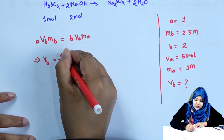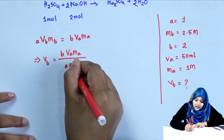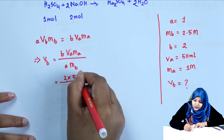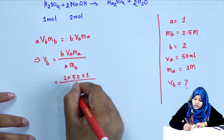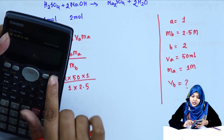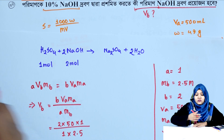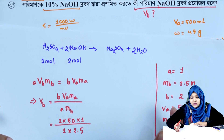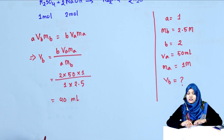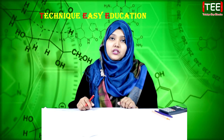Using the formula VB equals MA times VA divided by MB: Bb (n-factor of base) equals 2, VA equals 40 mL, MB equals 40. So VB equals 40 milliliters. That means 40 milliliters of 10% sodium hydroxide solution is required for complete neutralization. That concludes today's problem. Please follow, like, and subscribe to the channel.